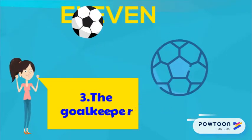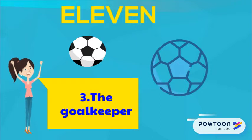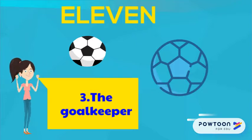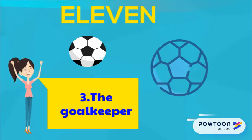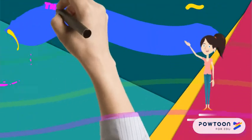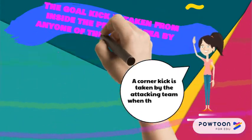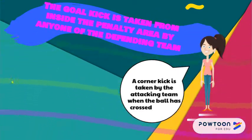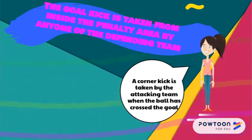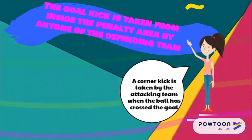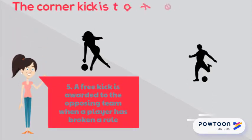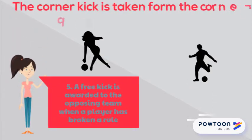Number 4: A goal kick is taken by the defending team when the ball has crossed the goal line without a goal having been scored and having last been touched by a player of the attacking team. The goal kick is taken by the defending team. Number 5: A corner kick is taken by the attacking team when the ball has crossed the goal line without a goal having been scored and having last been touched by a player of the defending team. The corner kick is taken from the corner by anyone of the attacking team.